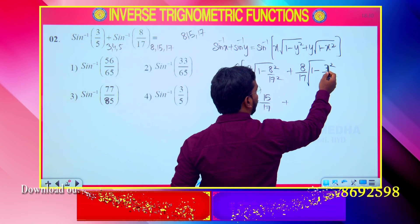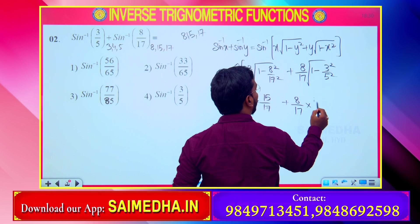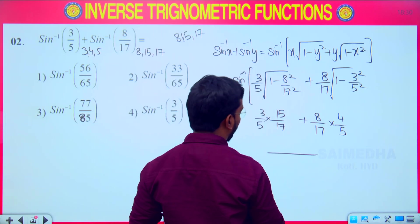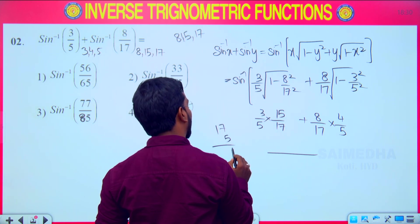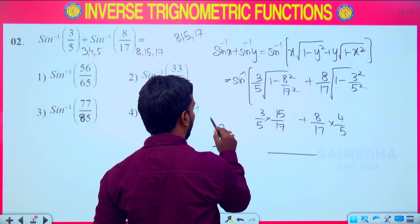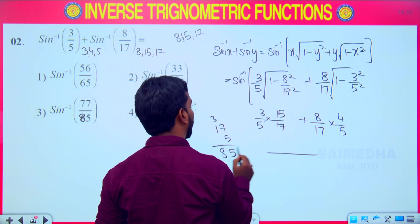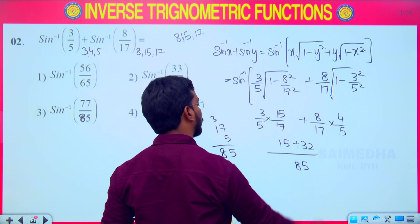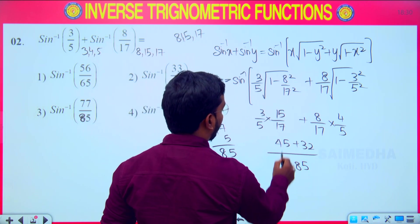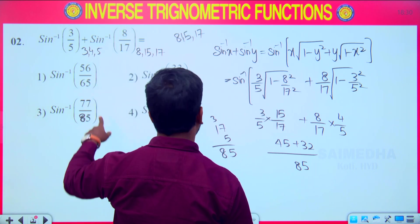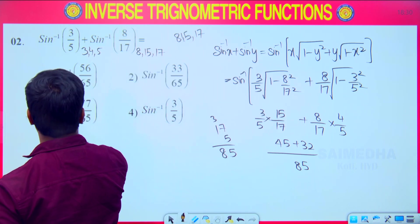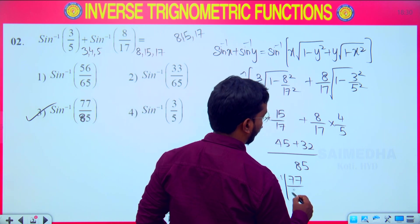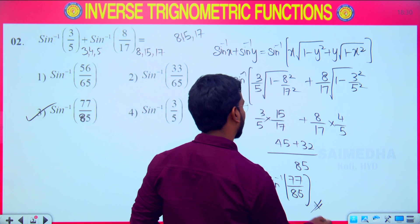For y = 8/17, √(1 − 9/25) = 4/5, using the triplet 3, 4, 5. Substituting: (3/5)(15/17) + (8/17)(4/5). The denominator is 5 × 17 = 85. The numerator: 3×15 = 45 and 8×4 = 32, so 45 + 32 = 77. The answer is sin⁻¹(77/85).